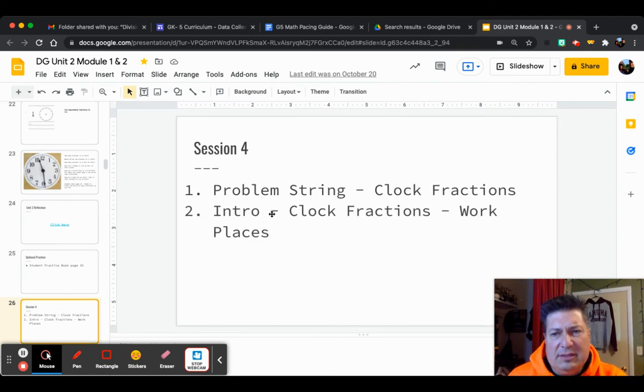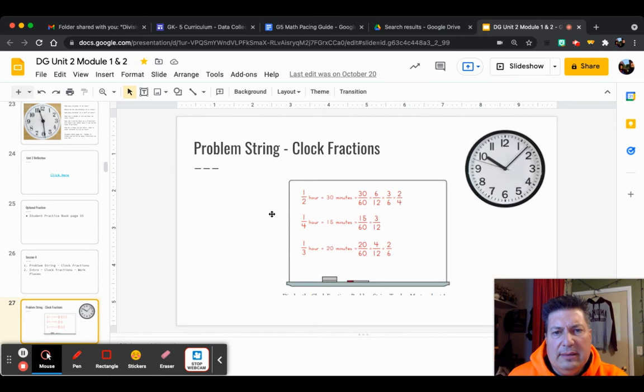Problem strings and clock fractions. We did this in small group as well. But here's some problem strings. One half hour equals 30 minutes. 30 out of 60 also equals 6 over 12, which equals 3 out of 6, which equals 2 out of 4. You can say them 2 out of 4 or 3 out of 6. But you also can say them 2-fourths, 6-twelfths, 30-sixtieths. A quarter of an hour is 15 minutes. A quarter of a dollar is 25 cents. But a quarter of an hour is 15 minutes. And we're talking about clocks. It's also equal to 15-sixtieths or 3-twelfths. And you can see 1-third. It's time for an orange Kool-Aid break.